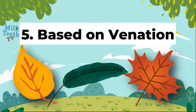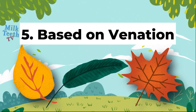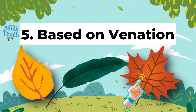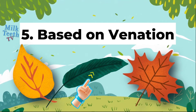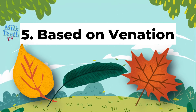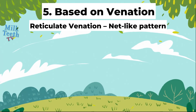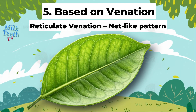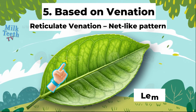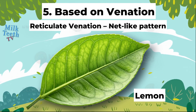Lastly, we may classify leaves based on venation — that is the arrangement of veins in the lamina of the leaf. Number 1: reticulate venation, wherein the spread of veins on the blade of the leaf is in a net-like pattern, for example a lemon leaf.